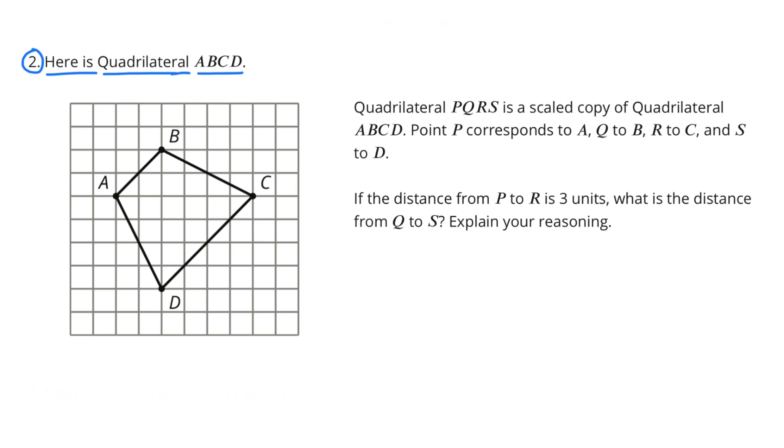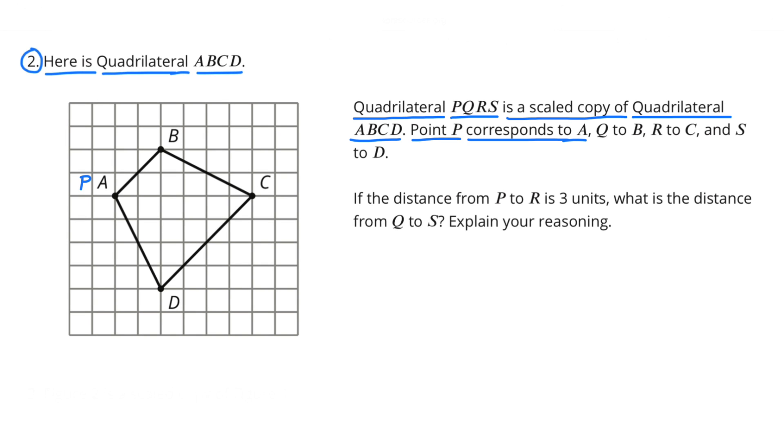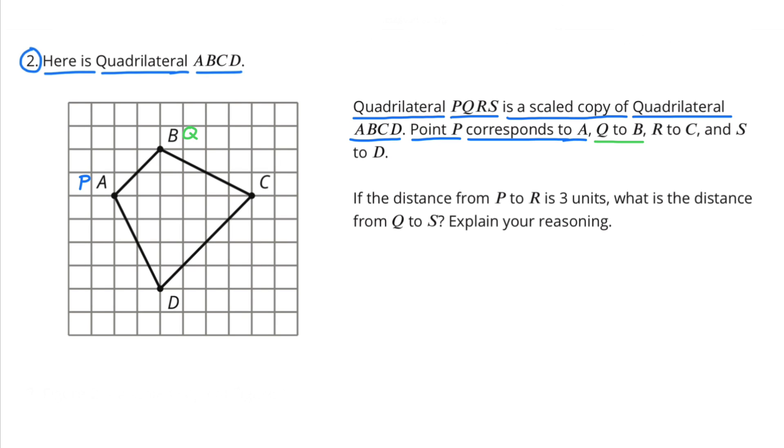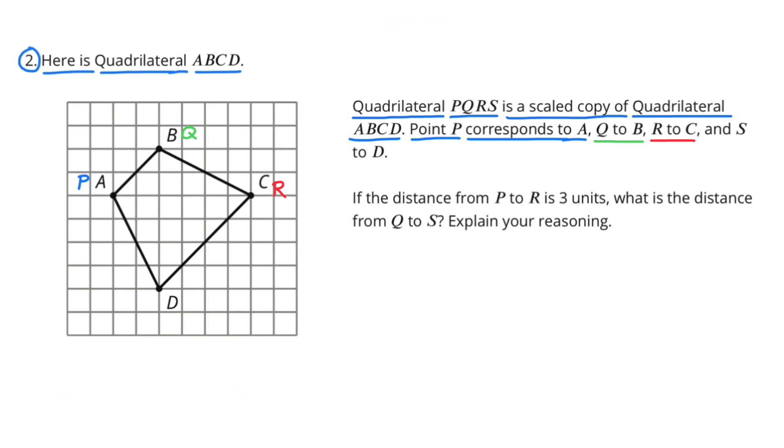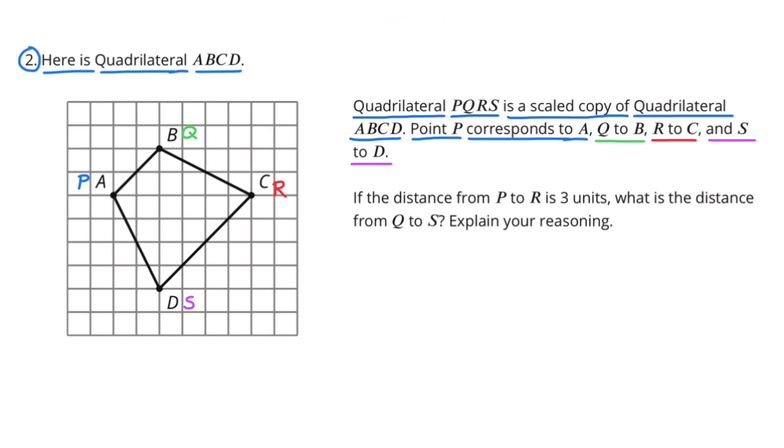Number 2. Here is quadrilateral ABCD. Quadrilateral PQRS is a scaled copy of quadrilateral ABCD. Point P corresponds to point A, point Q to point B, point R to point C, and point S to point D. If the distance from point P to point R is 3 units, what is the distance from point Q to point S? Explain your reasoning.